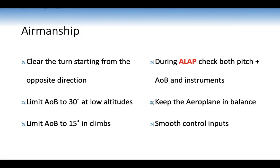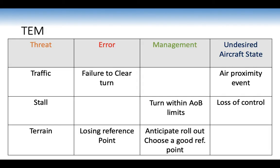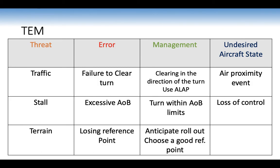For a good, successful turn: ensure your pitch and bank are correct, use the ALAP cycle, maintain 80% outside and 20% inside scan, and keep the aeroplane balanced for comfort. Use smooth controls with no abrupt movements. Threat and error management: traffic threat — clear the turn and use ALAP; stall threat — stay within angle of bank limits; loss of control threat — avoid excessive angle of bank. Terrain and losing reference point — anticipate rollout with a good reference point. Undesired aircraft state: disorientation — remain orientated throughout.